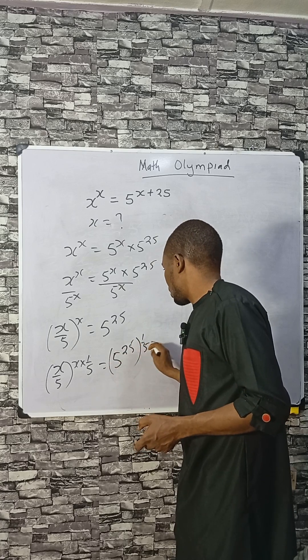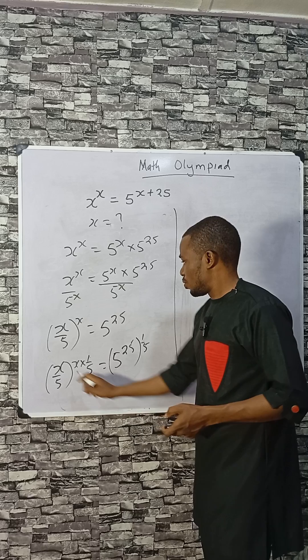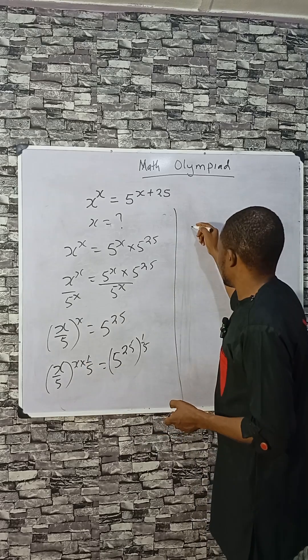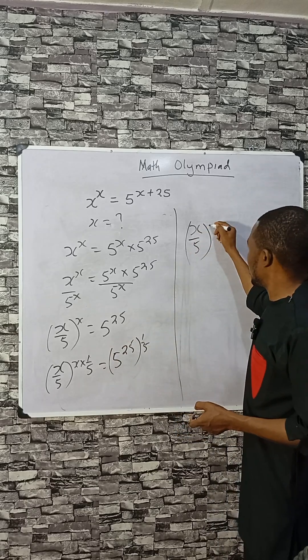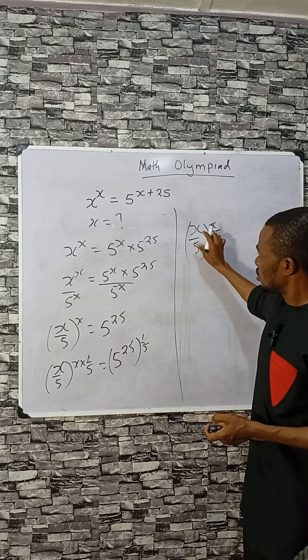By 1 over 5, so that we can have x times 1 is... x times 1 here is x divided by 5, just as what is here.